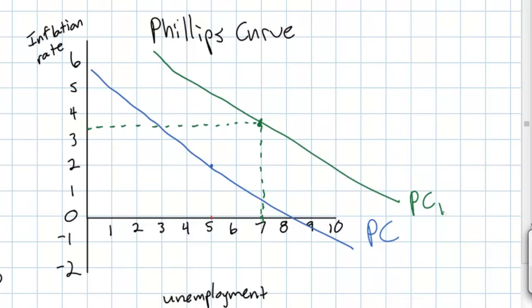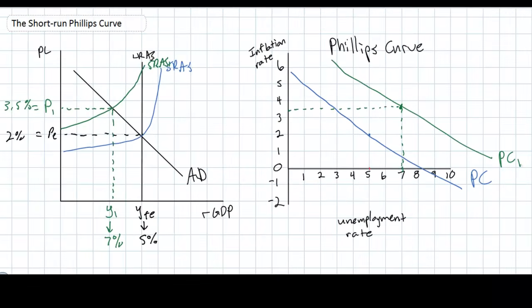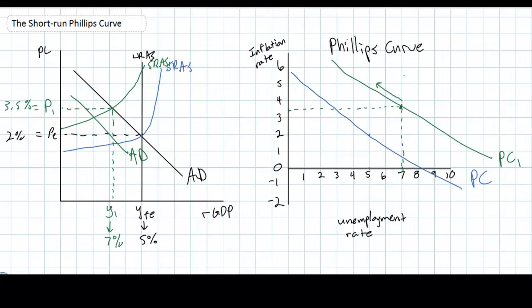The entire Phillips curve shifts to the right because if aggregate demand now increased from AD to AD1 in our graph on the left, we would have demand-pull inflation and lower unemployment, corresponding with a movement up and to the left along our new PC1. Conversely, if AD decreased to AD2, inflation would fall and unemployment would rise, moving downward and to the right along PC1. Essentially, a shift of the aggregate supply curve corresponds with a shift of the Phillips curve — if AS shifts left due to a negative supply shock, the Phillips curve shifts to the right.